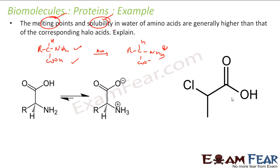So to summarize: the amino acid forms a zwitterion, which creates more electrostatic interaction with water, resulting in high melting point and high solubility. The halo acid does not form a zwitterion and therefore lacks these properties.